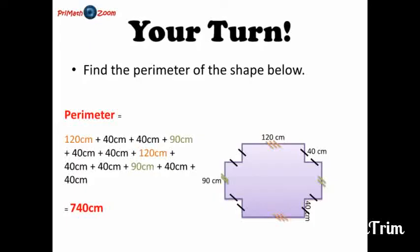First, we start with 120 centimeters. And moving over to the right, we have 40 centimeters. Then another 40 centimeters. Then 90 centimeters. Then another 40 centimeters. Pay attention to the number of strokes. Another 40 centimeters. Then three strokes mean 120 centimeters. 40 centimeters. 40 centimeters again. Then 90 centimeters. 40 centimeters. And finally, another 40.